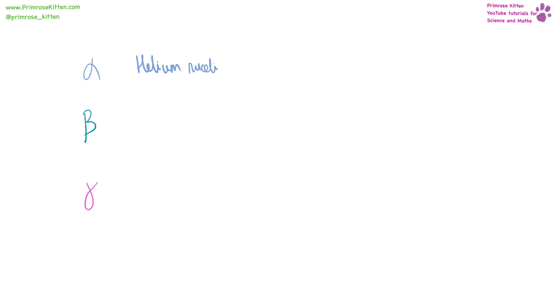There are three types of radiation: alpha radiation, beta radiation, and gamma radiation. Alpha radiation is also known as a helium nucleus. Beta radiation is also known as an electron. And gamma radiation is part of the electromagnetic spectrum — it's a wave. A helium nucleus in alpha radiation can be written as alpha 4, 2 — mass of four, positive charge of two. An electron can be written as E — mass of zero, charge of minus one. And gamma is again just a wave.